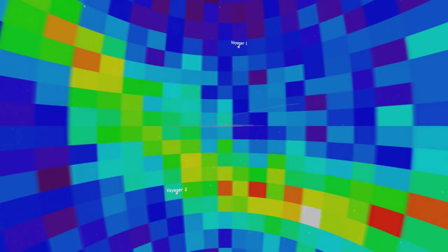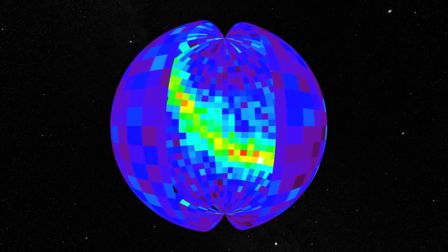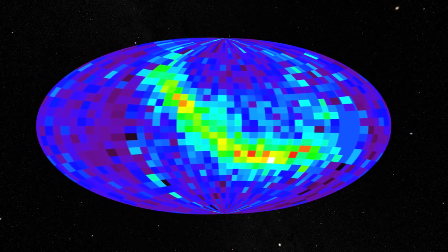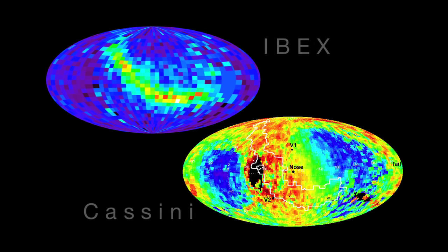Even as the Voyagers answer questions about our solar system, they raise others. For example, scientists aren't clear yet how the bubbly heliosheath is linked to the ribbon feature discovered by Ibex and Cassini. This ribbon shows the emission of energetic particles and seems to indicate some interaction with interstellar space.